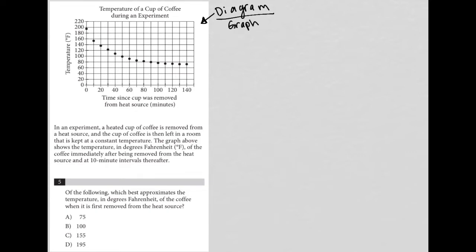So whenever I see a graph, I look at the heading here, which we have in this case: temperature of a cup of coffee during an experiment, where the x-axis is the time since cup was removed from heat source, and the y-axis is the actual temperature.